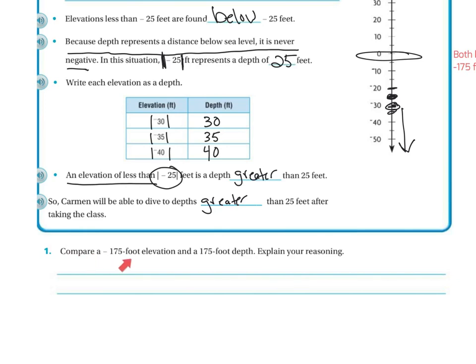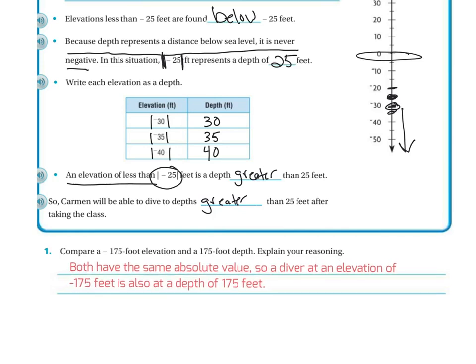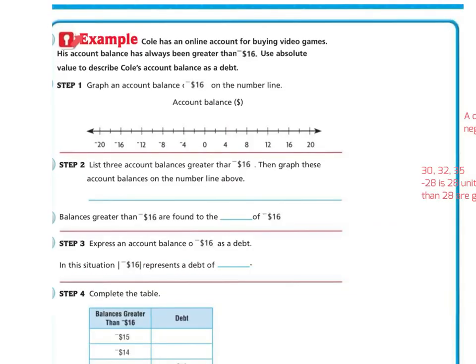Compare negative 175 foot elevation and 175 foot depth. Explain your reasoning. Well, both have the same absolute value. So the diver at an elevation of negative 175 feet is also at a depth of 175 feet. Another example.